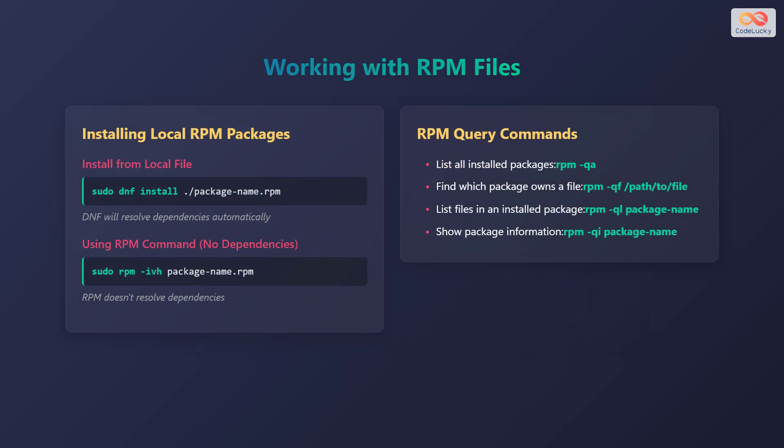Let's explore how to work with RPM files. To install an RPM package from a local file, use the command sudo dnf install /package-name.rpm. DNF will automatically resolve any dependencies.